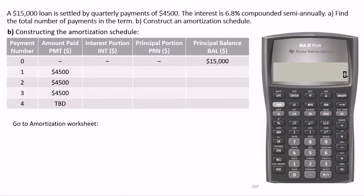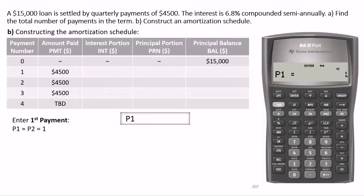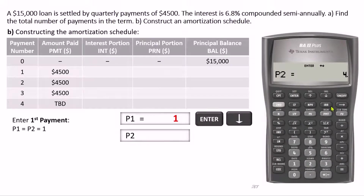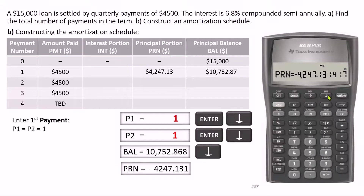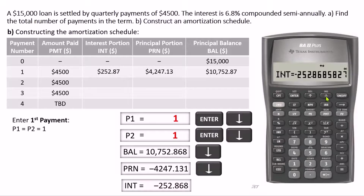To find the interest and principal portions of the first payment, we go to the amortization worksheet by pressing 2nd and PV. Both starting and ending payment should be set to 1 for the first payment. P1 is already 1; use the down arrow key to go to P2 and set it to 1 as well. Scrolling down, after the first payment the balance of the loan will be $10,752.87. The principal portion and interest portion — $252.87 — of the first payment are shown.